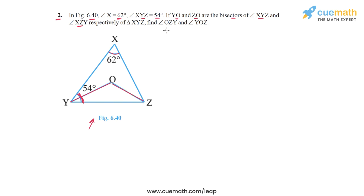Now given this we have to find angle OZY, OZY is this angle and angle YOZ. So these two angles, let's actually highlight them in a different color and we have to find this angle OZY and angle YOZ.